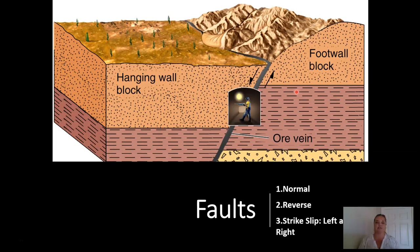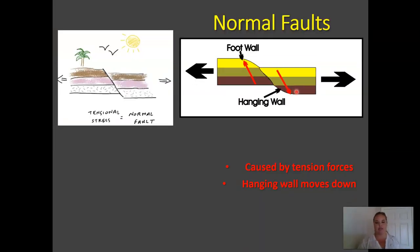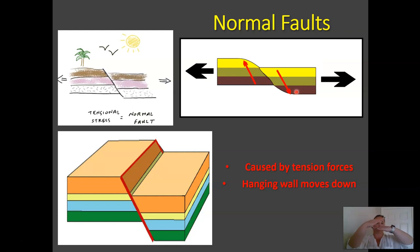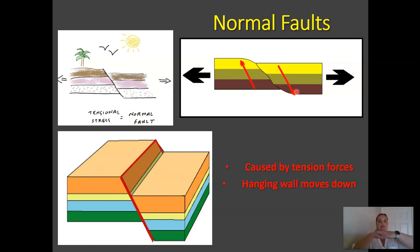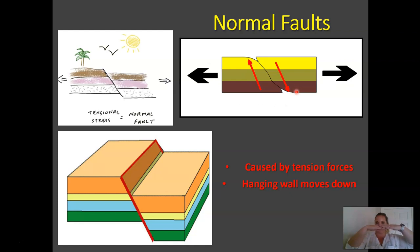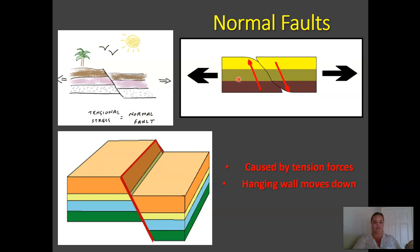Normal faults are caused from tension — things are being pulled apart and one of the blocks drops down. To remember the difference between normal and reverse, take your hands and put one on top of the other. If you pull them apart, the top hand slides down. So here the hanging wall always moves down. The foot wall moves up. The acronym FUN will help you remember: foot wall up, normal. The foot wall moves up and the hanging wall moves down.